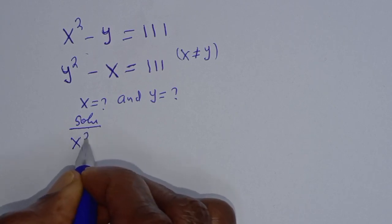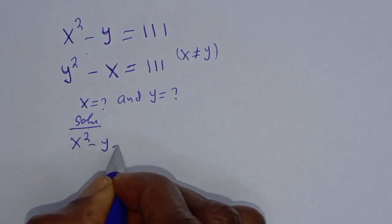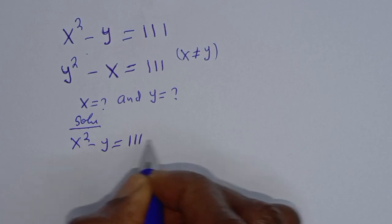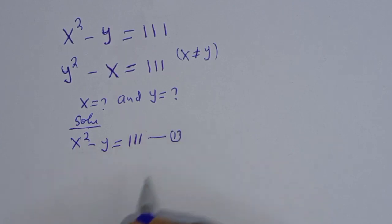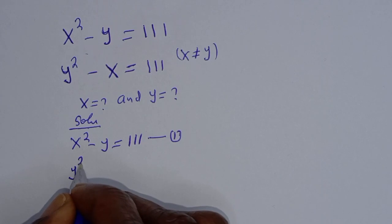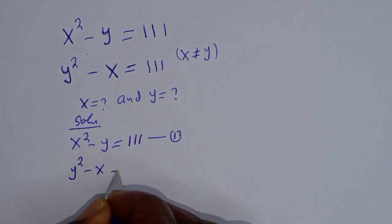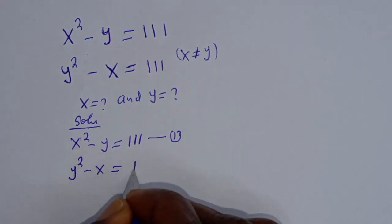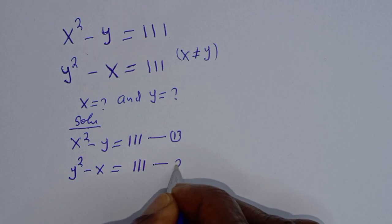x squared minus y is equal to 111 — let's call this equation 1. y squared minus x is equal to 111 — let's call this equation 2.